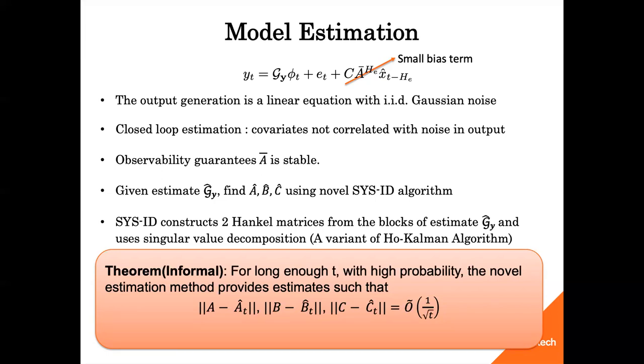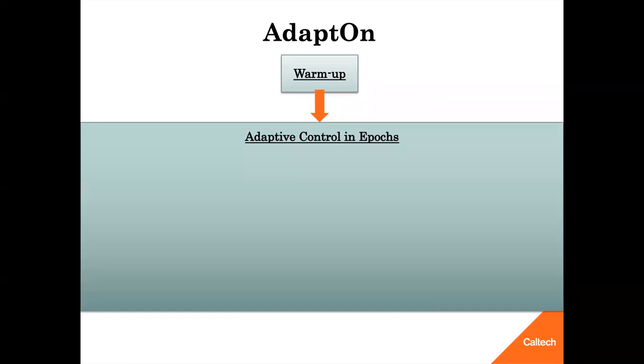Now that we have the method to learn the system dynamics, we will focus on the adaptive control algorithm for LQG. In this work, we propose a reinforcement learning algorithm called AdaptOn. AdaptOn starts with a short warm-up period using Gaussian excitations to get a sense of the underlying system. It then starts adaptive control of LQG in epochs with doubling length. In the beginning of each epoch, AdaptOn uses all the data obtained so far, both open and closed-loop, and estimates the model parameters using the novel estimation algorithm described.